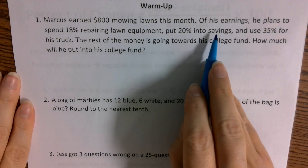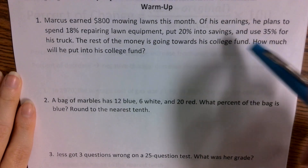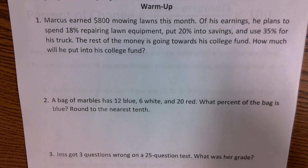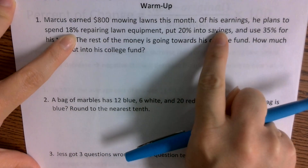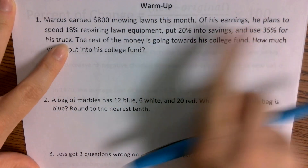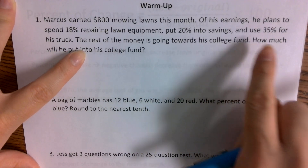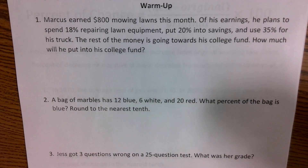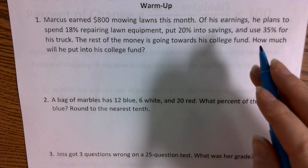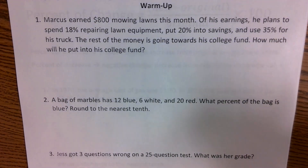Savings is not the same thing as his college fund. I can see where that might be a little misleading, but it says it's 18% for lawn equipment, 20% for savings, 35% for the truck, and the rest of it is going to go into a college fund. So I need to figure out what percent is the college fund. 20% is not the college fund — that's his savings account.